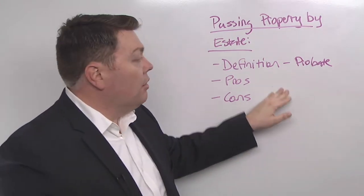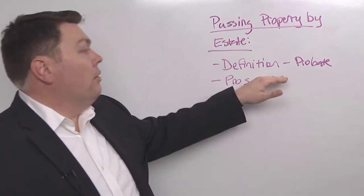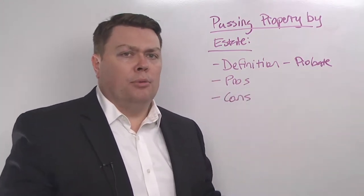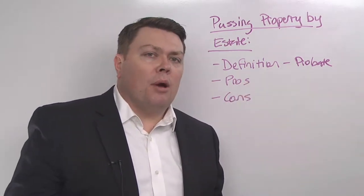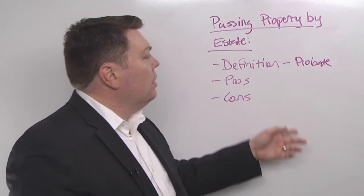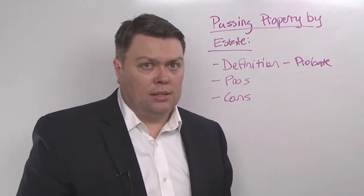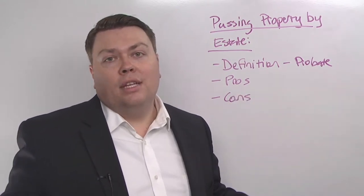In California, if your gross estate is under $150,000, then it doesn't have to go through the full formal probate. But most estates here, if you own a piece of real property, at least here in Southern California, you are going to go through a full-fledged probate process. Because we're talking about gross estate, they pretend like you don't have any debts.